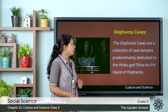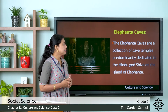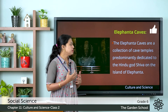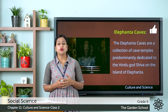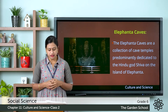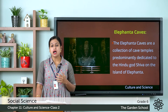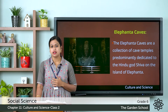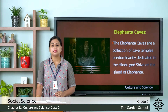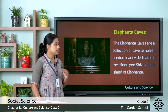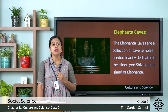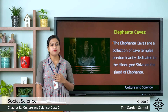Next, we will discuss about the Elephanta caves. The Elephanta caves are a collection of cave temples predominantly dedicated to the Hindu god Shiva, on the islands of Elephanta, which is a short distance away from Mumbai. These caves are carved out of hills and form a Brahmanical cave temple with three entrances and six rows of pillars. One of the most striking sculptures of this cave is the Trimurti — that is, the three-headed form of Lord Shiva.